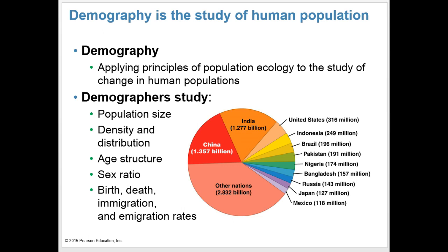We must remember that people do not exist in isolation — we exist within our environment as one of many species, and like all other species, we are subject to the same natural forces that drive biological change in the natural world. The application of principles from population ecology to the study of statistical change in human populations is the focus of demography. Demographers study population size, density, distribution, age structure, sex ratio, and rates of birth, death, immigration, and emigration, just as population ecologists study these things with other organisms. Each of these characteristics helps us predict population dynamics and environmental impacts.